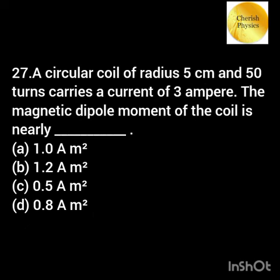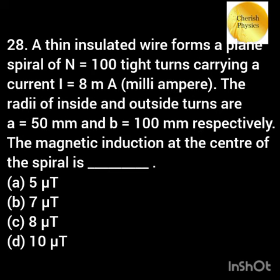A circular coil of radius 5 cm and 50 turns carries a current of 3 ampere. The magnetic dipole moment of the coil is?